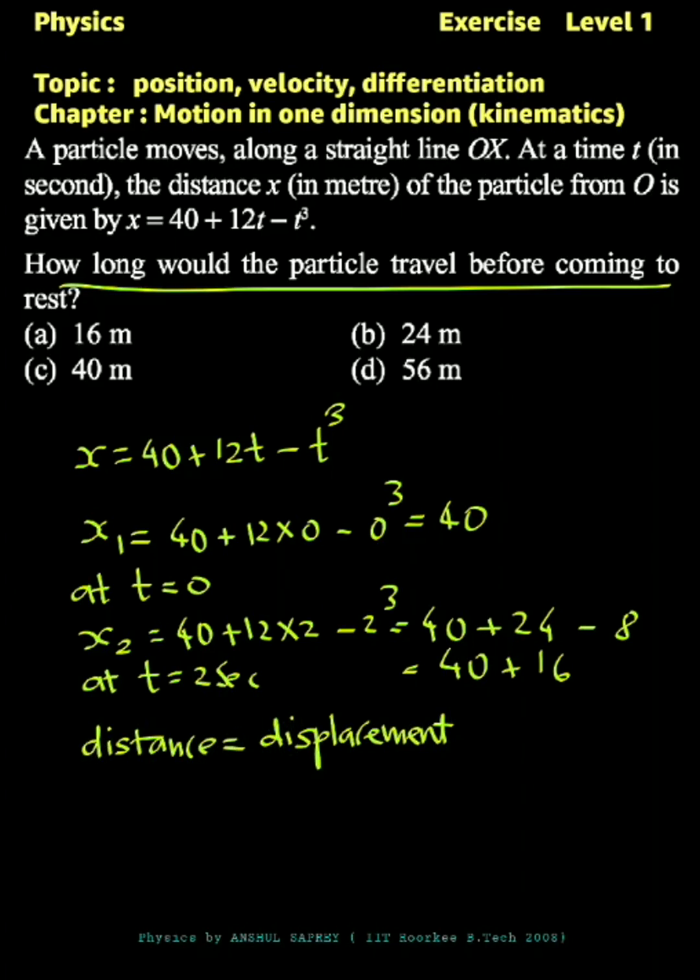So we'll find the distance same as displacement during these two seconds. It will be equal to x2 minus x1, that is 56 minus 40. So the answer is 16 meters, first option.